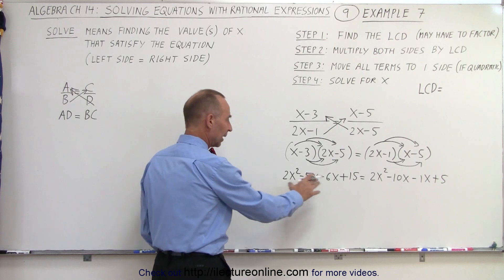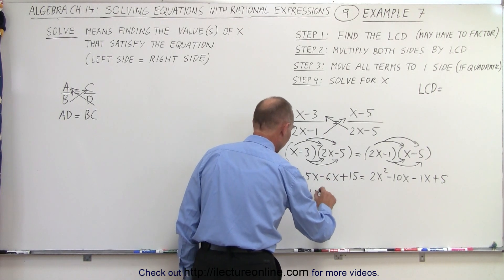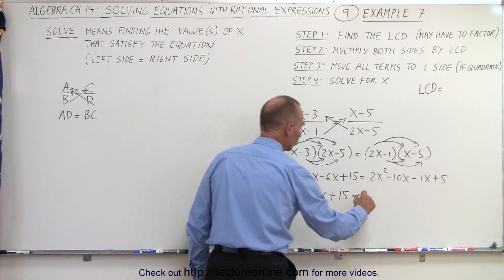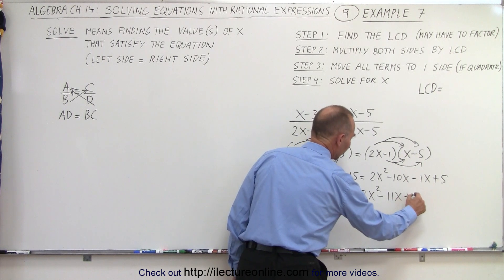Now let's combine like terms on both sides. So here we have 2x squared minus 11x plus 15 equals 2x squared minus 11x plus 5.